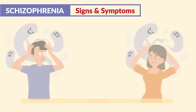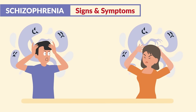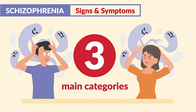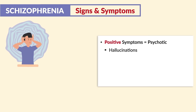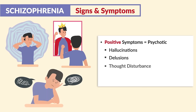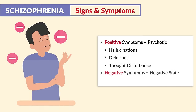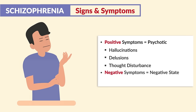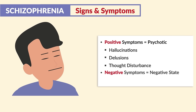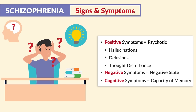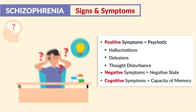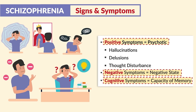Now for the signs and symptoms, this varies from patient to patient, but there are three main categories to know for your exams. Number one is positive symptoms, known as psychotic symptoms. The second big category is negative symptoms, or a negative state, where the client shows lack of emotions and facial expressions. And the third is cognitive symptoms, or capacity of memory — clients have difficulty understanding and learning new things.